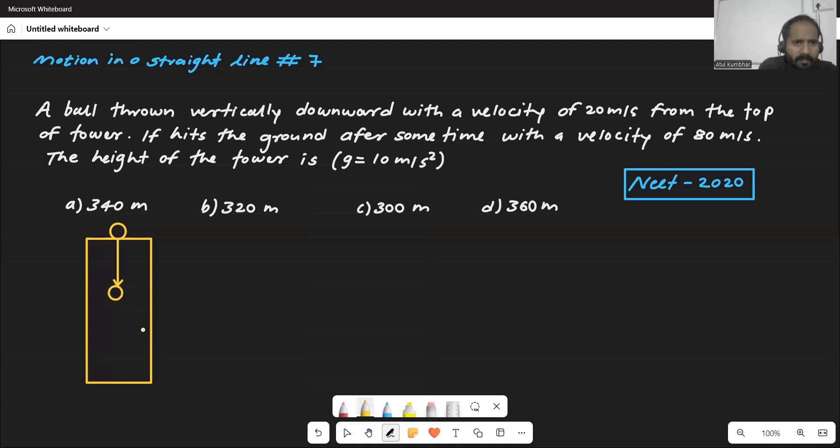Here we have some velocity. The top of this tower is going to be 20 meters per second. Now if it hits the ground, it hits the ground with a velocity of 80 meters per second, so here is the velocity. That will be the final velocity, that will be 80 meters per second, and the height of the tower is they are asking us to find out the height h.